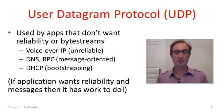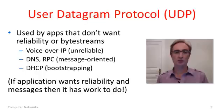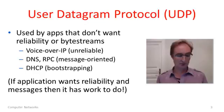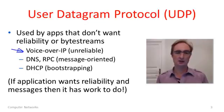UDP as a datagram protocol is an unreliable one. It's used by applications that either don't want reliability, or don't want some other kind of abstraction than messages such as a byte stream. One example is a voice over IP application. Typically for real-time conferencing, we don't want reliability there, so UDP is a good fit.